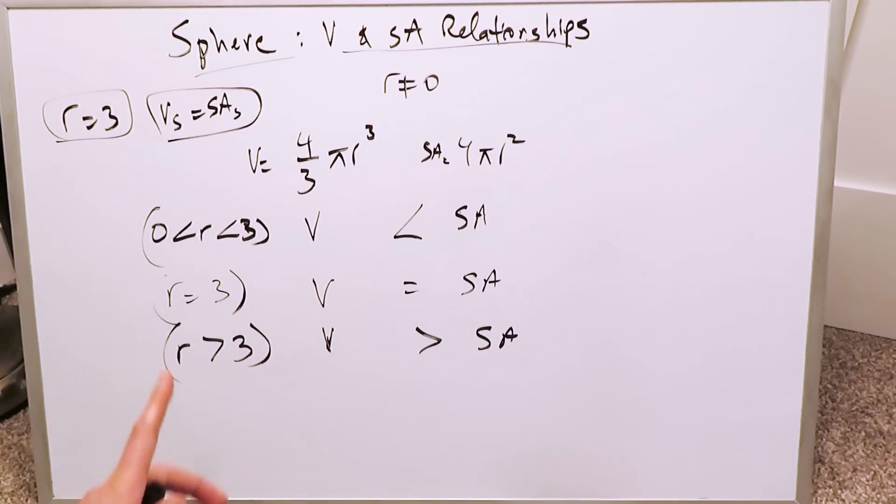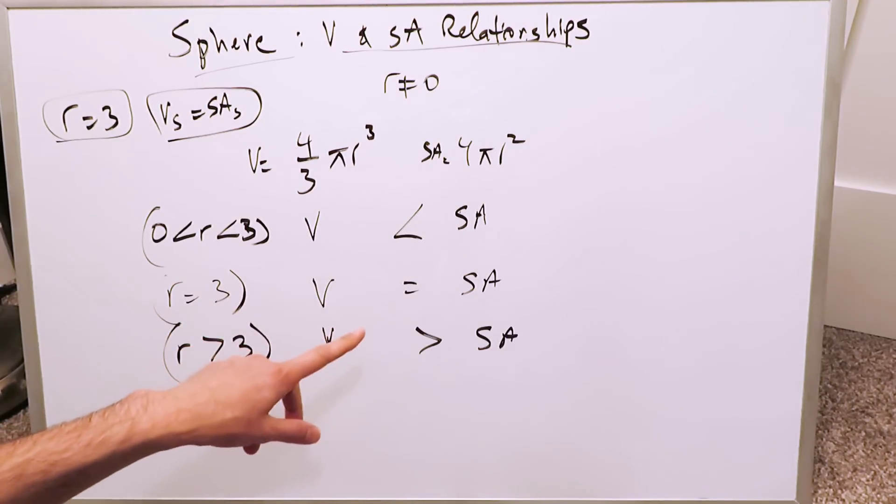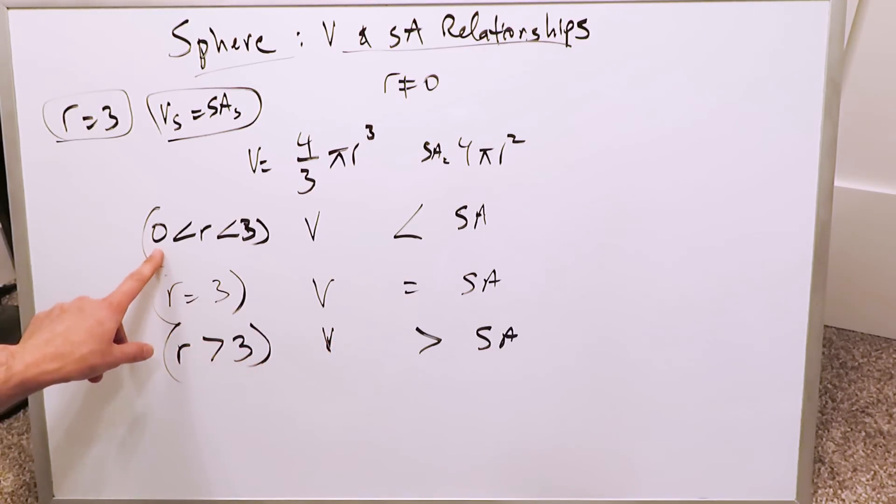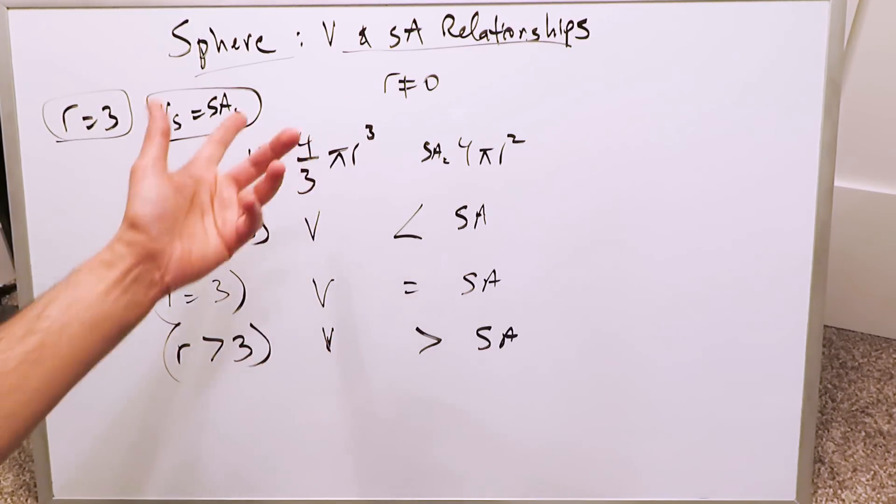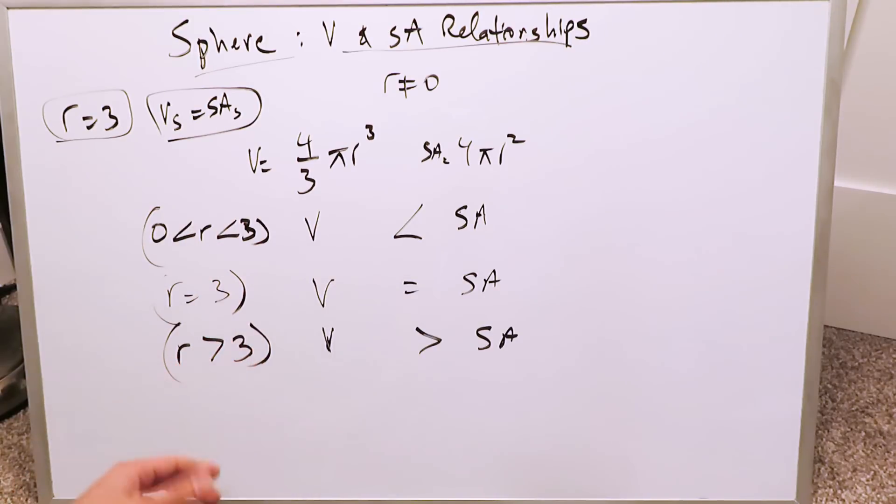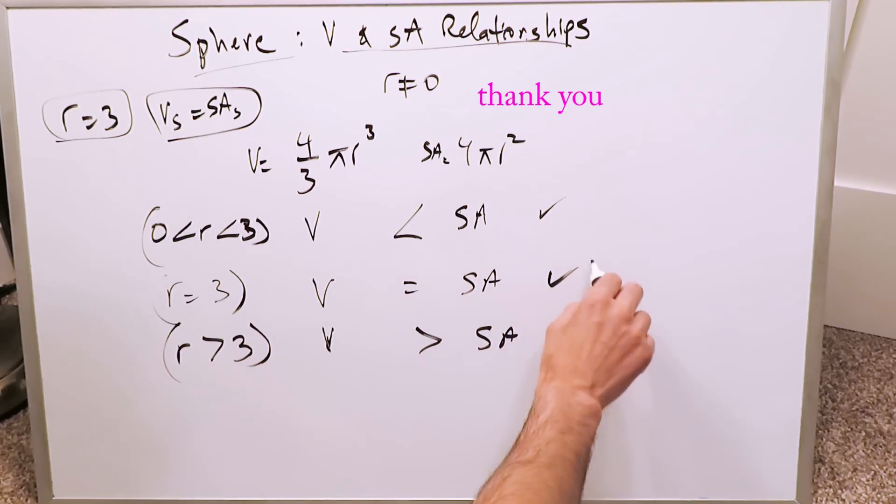And we are done. Now you can see how everything comes into play. Keep in mind these values here are not equal to 0. They're not equal to 3. They're in this interval. Because at r equal to 3, volume and surface area are equal. At r equal to 0, you cannot have a sphere because there's no dimension. For values larger than 3, the volume is greater than surface area. And it brings us to the end of this video. Thank you for watching.